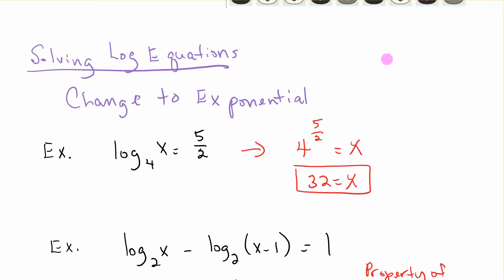Solving log equations. The key to solving log equations is to change them to exponential. If this is our original problem, log base 4 of x equals 5 over 2, switch it to exponential. Remember this is your base, this is your exponent. So 4 to the 5 halves equals x. You can do 4 to the 5 halves, that square root of 4 is 2, 2 to the 5th is 32.